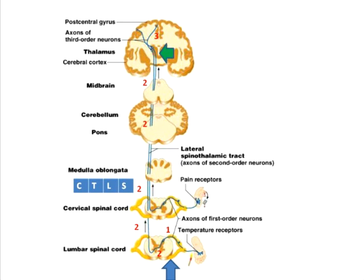The tract continues through the medulla and then the pons, where it is joined by the spinotectal tract, forming the spinal lemniscus. It further passes through the midbrain, and the second order neuron ends in the thalamus, precisely at the ventral posterior lateral nucleus. The tract is functional at the level of the thalamus, as pain and temperature can be perceived there.